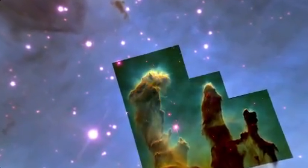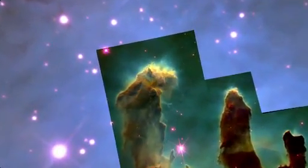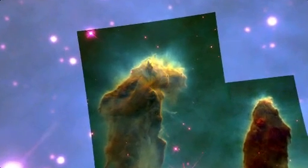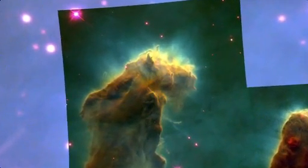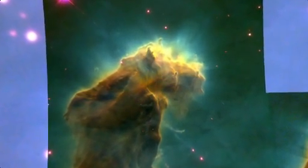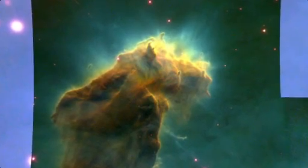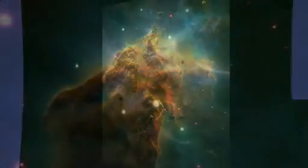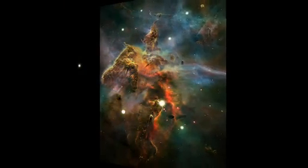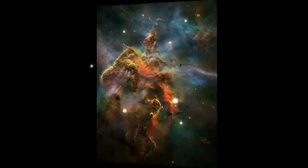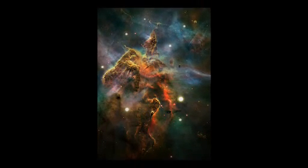Stars and planets form in the dark inside vast cold clouds of gas and dust, such as these pillars imaged by the Hubble Space Telescope. The dust is so thick we can't see the infant stars inside, at least not with visible light.